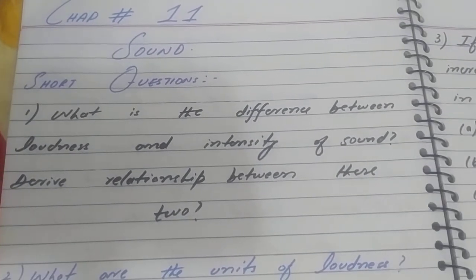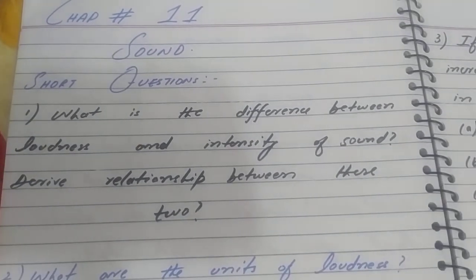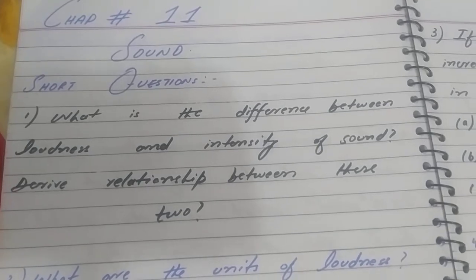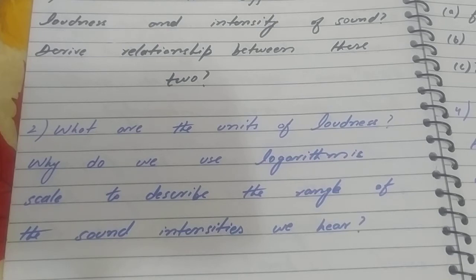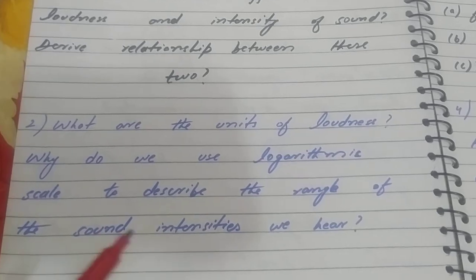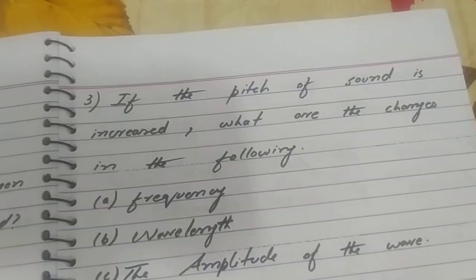Short questions: Question one is what is the difference between loudness and intensity of sound — derive the relationship between them. Question two: what are the units of loudness, and why do we use a logarithmic scale to describe the range of sound intensity we hear?